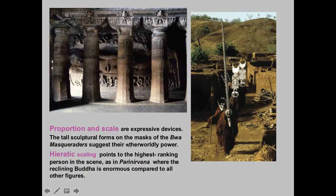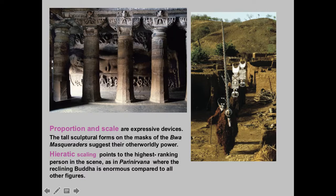Here we have a large Buddha relative to the size of this building — this is an interior carved from living rock. You get a sense of the importance of the Buddha in this context because this figure, usually a royal or a deity or religious figure, is larger than all the other figures. Notice there are figures down here of lesser importance than the large figure. That is why proportionally this person is quite a bit larger — or the scale is different.